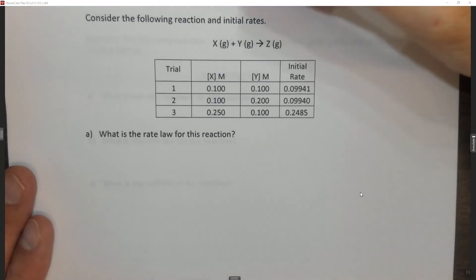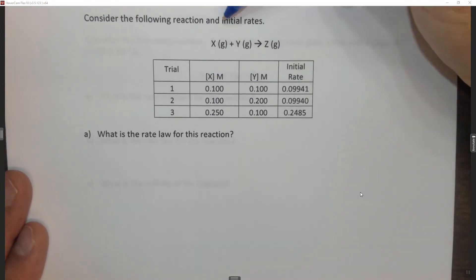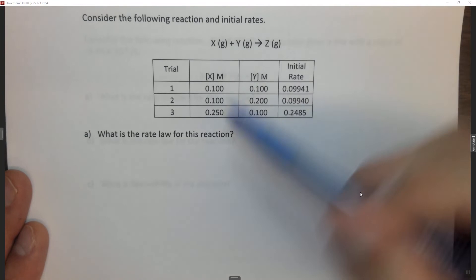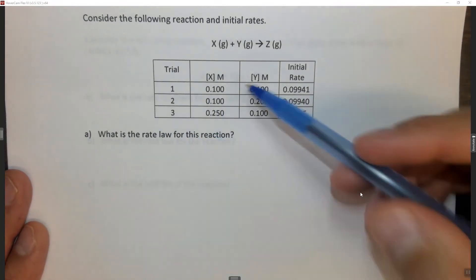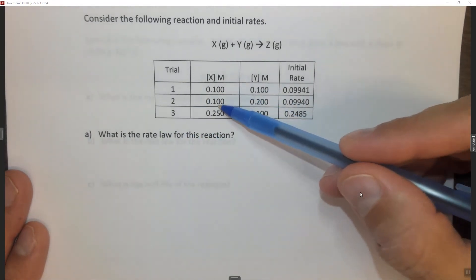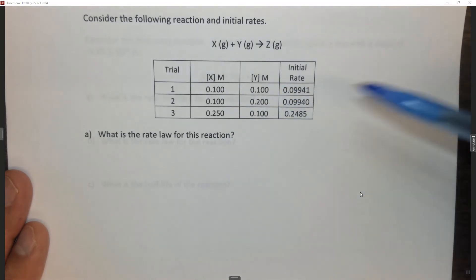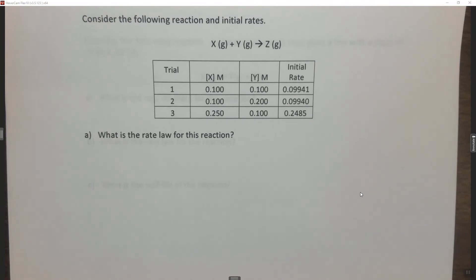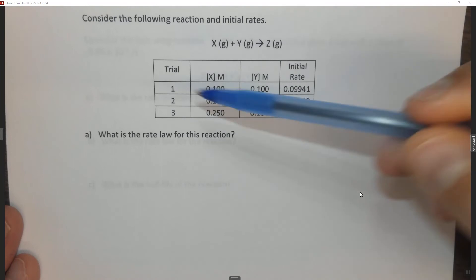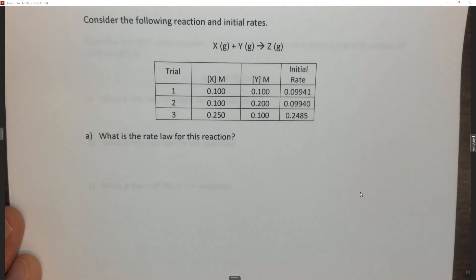This question is quite challenging. It says consider the following reaction and initial rates. We have three trials of this reaction with the concentration of X for each trial, the concentration of Y for each trial, and the initial rate that you can measure by plotting it when you run the reaction. This information will allow us to determine the rate law for this reaction, but it's quite a difficult thing to do.